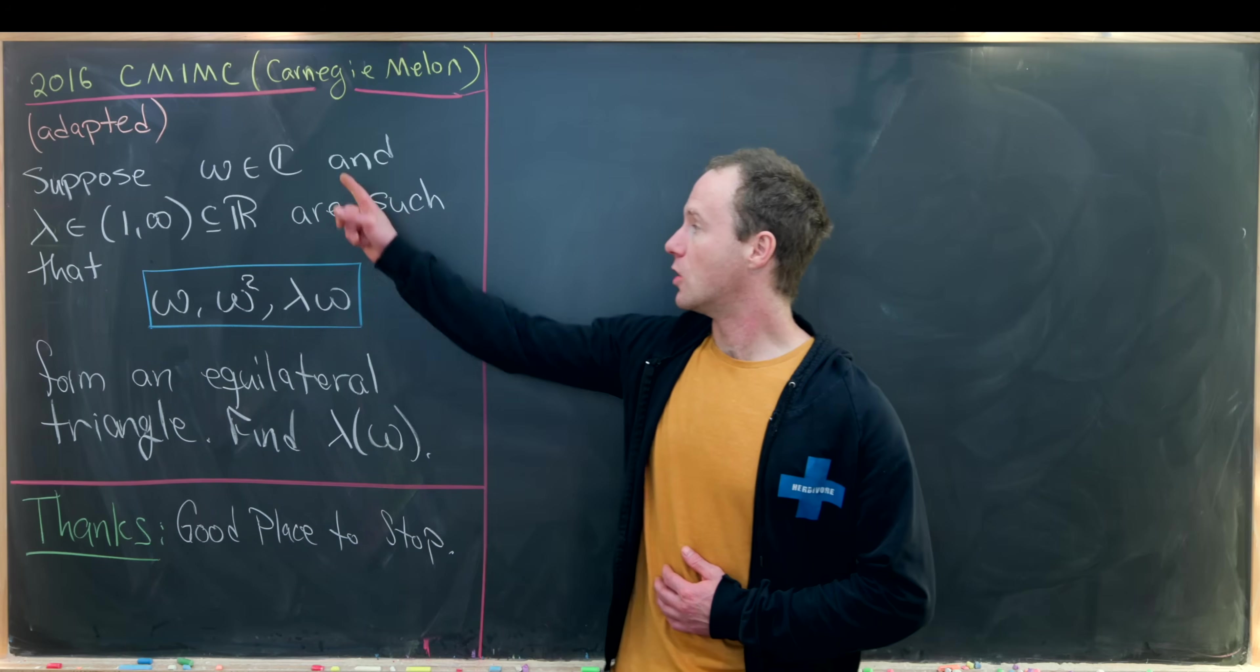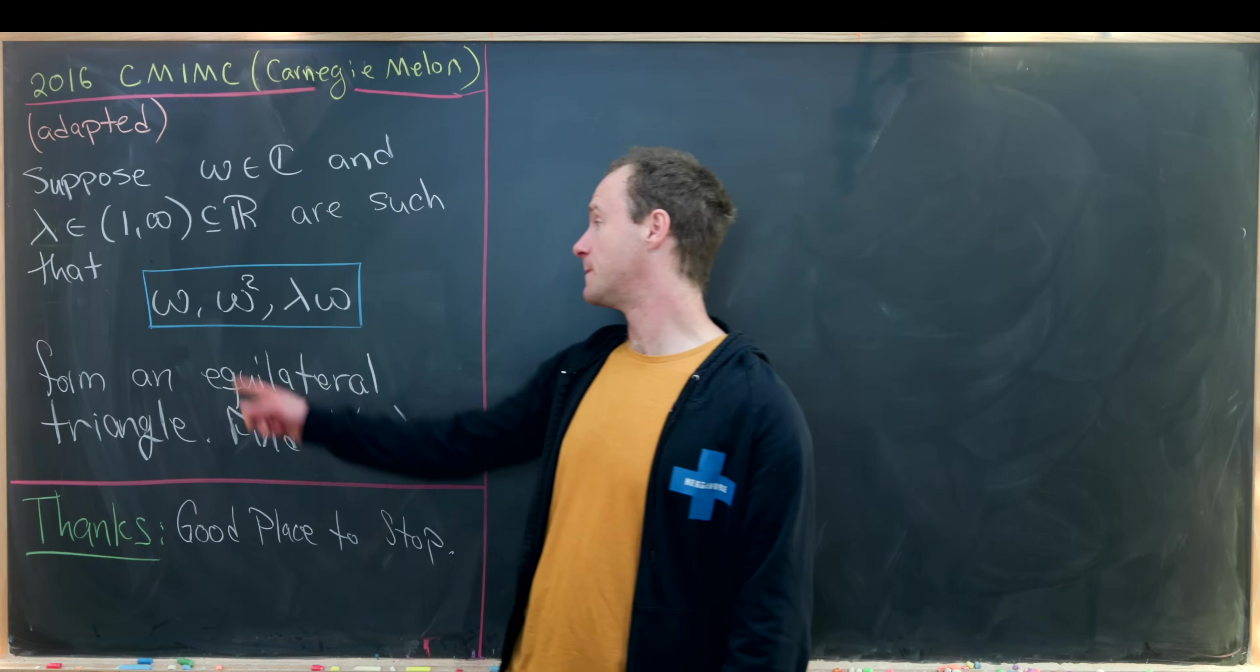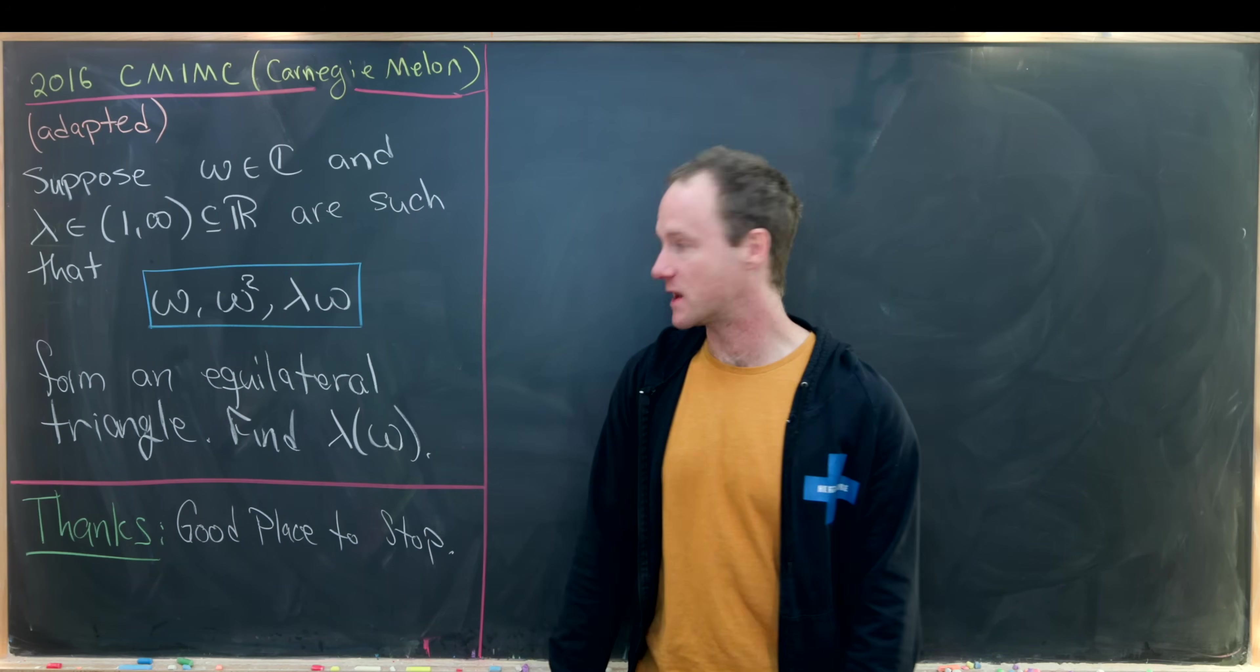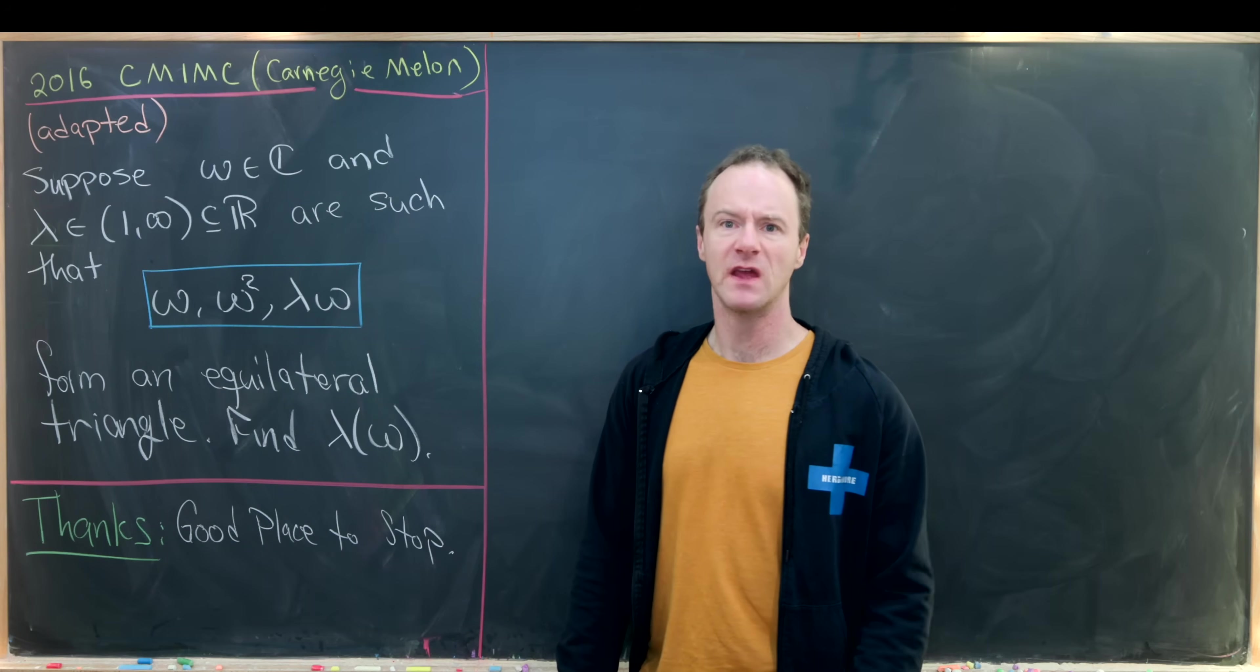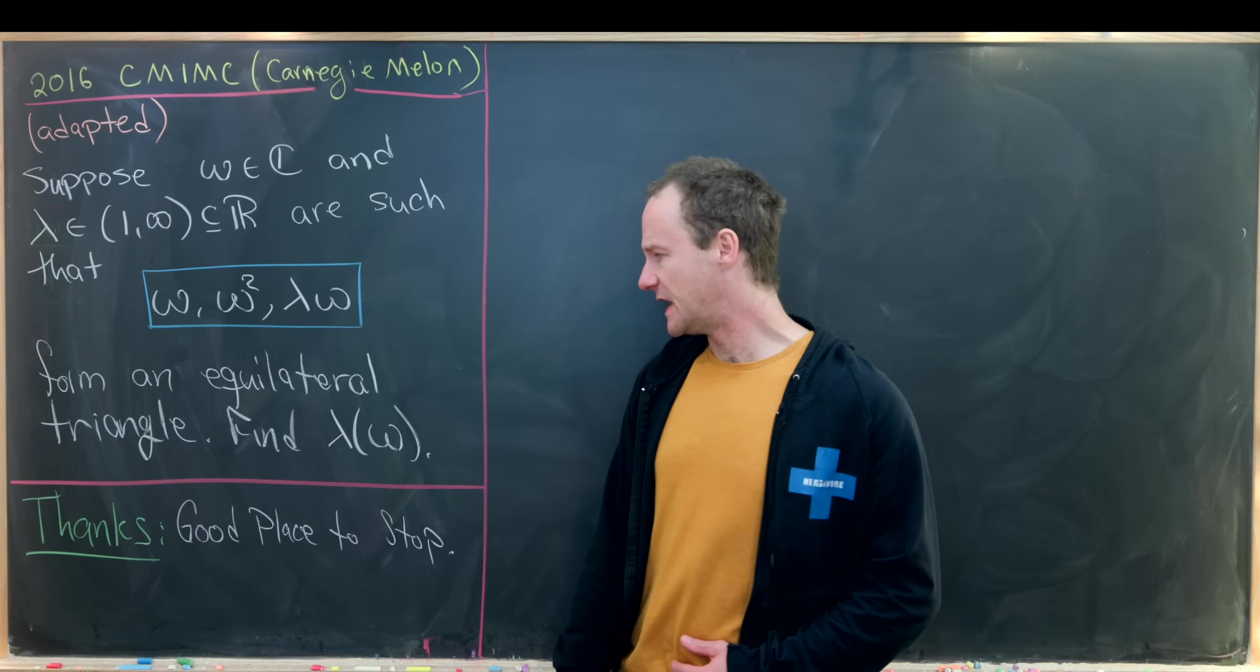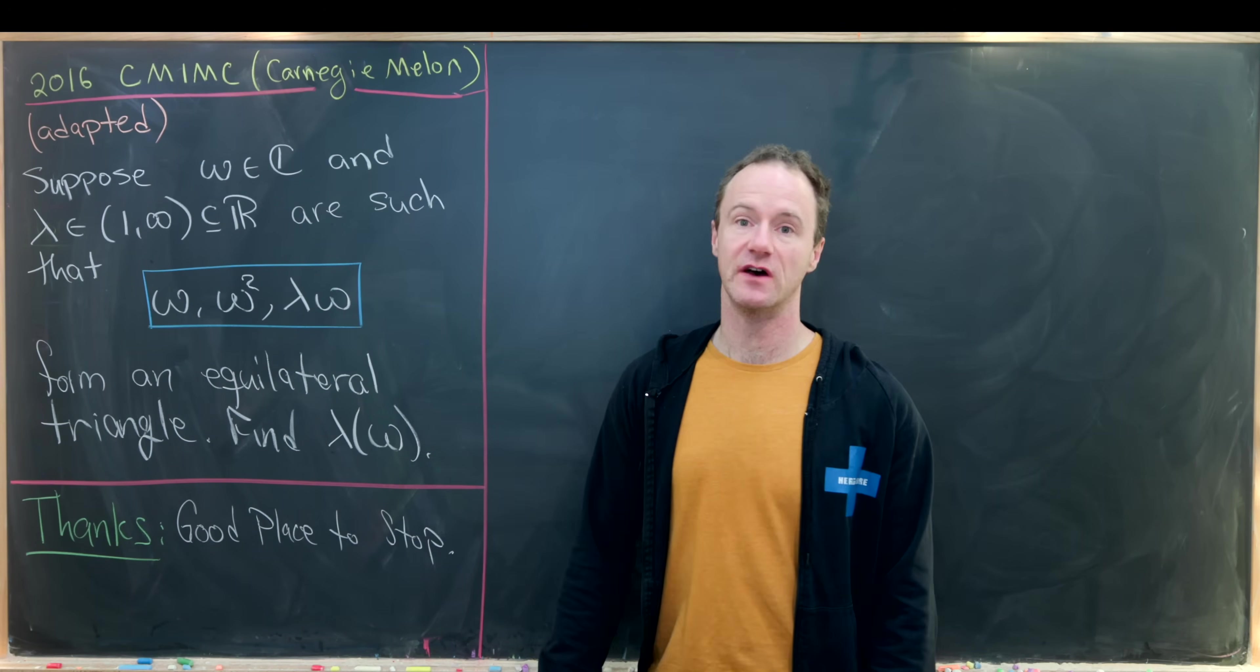Furthermore, omega and lambda satisfy the following condition. Omega, omega squared, and lambda times omega form an equilateral triangle. And that equilateral triangle is living in the complex plane. And our goal is to find lambda as a function of omega.